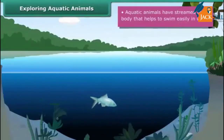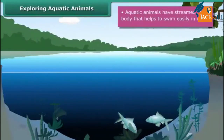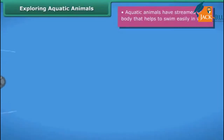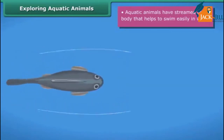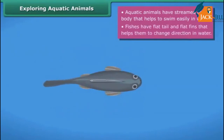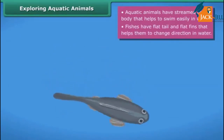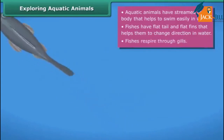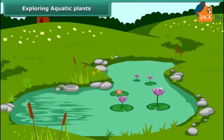Aquatic animals have special features and adaptations that help them survive in aquatic habitats. Aquatic animals like fish have streamlined bodies that help them swim easily in water. Fish have a flat tail and flat fins that help them change direction in water. Fish respire through gills.